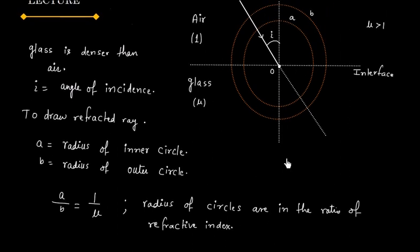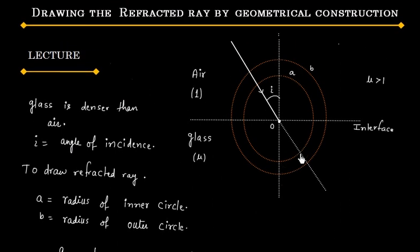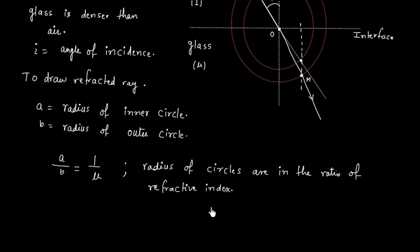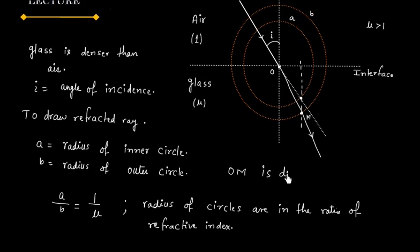Now to draw the refracted ray, let us make a perpendicular from the point of incidence on the medium interface boundary. This perpendicular will intersect the outer circle at a point. We connect this point — let us call it M — to center O. The line OM gives the direction of the refracted ray.